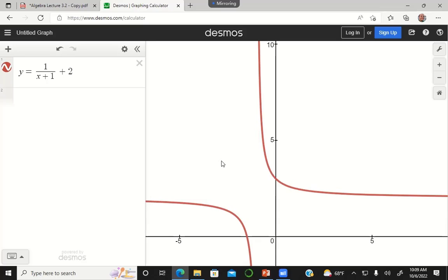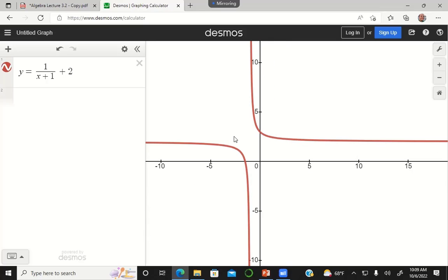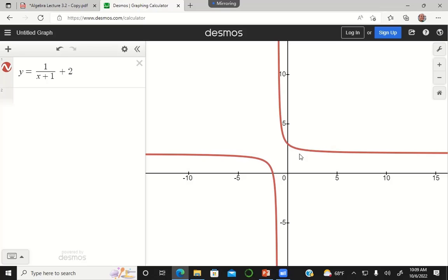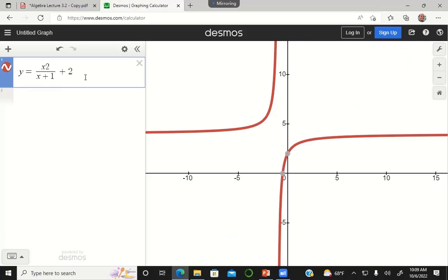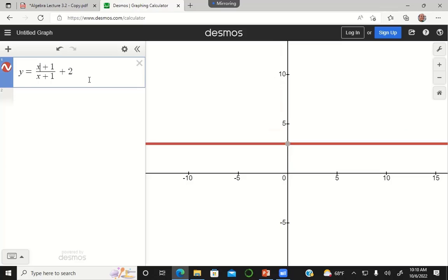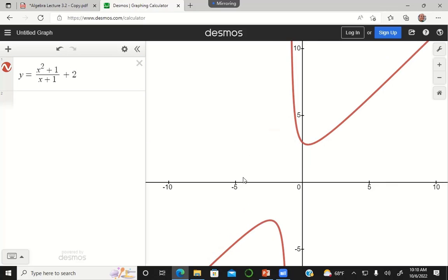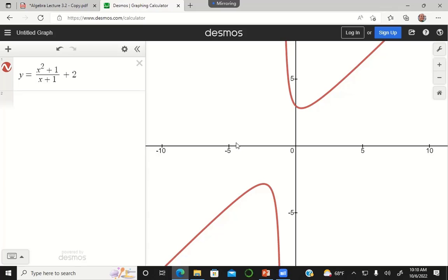Looking only at the graph and not what I typed in, if you were looking only at the graph, is this a polynomial? Could it be a polynomial? Is it even possible for this to be a polynomial? The end behavior is down on the left, up on the right. It's not flattening out anywhere. So that's a positive sign. But why can't this be a polynomial? What's wrong?